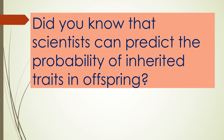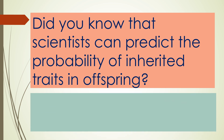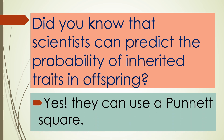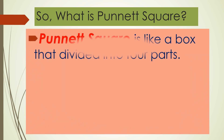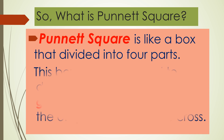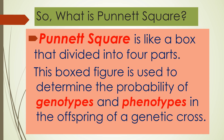Did you know that scientists can predict the probability of inherited traits in offspring? Yes, they can use a Punnett square. So, what is a Punnett square? A Punnett square is like a box divided into 4 parts. This boxed figure is used to determine the probability of genotypes and phenotypes in the offspring of a genetic cross.